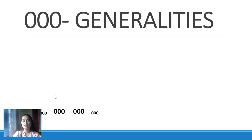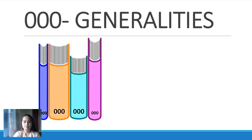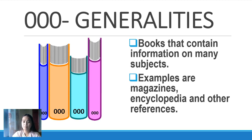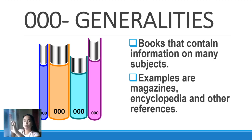What is 000? Zero-zero-zero means generalities. From the word general — books that contain information on many subjects. Examples are magazines, encyclopedias, and other references. So general means many subjects. We have many subjects: English, Math, Filipino, Araling Panlipunan, ESP, EPP. You can find them in the generality section. You go to the shelf numbered 000, where you find encyclopedias and magazines.